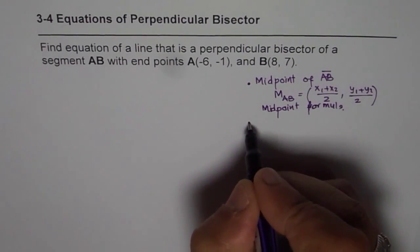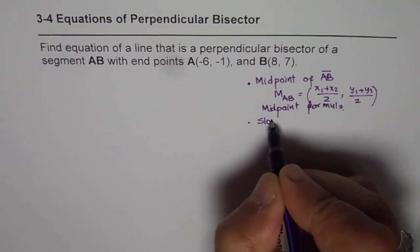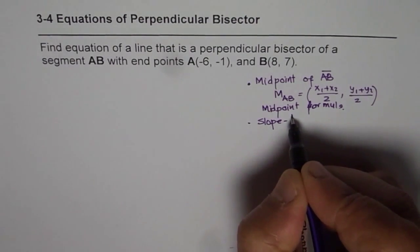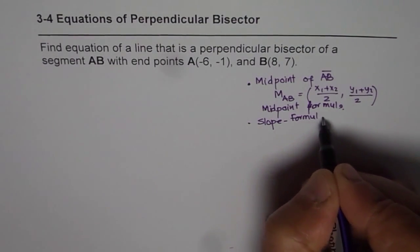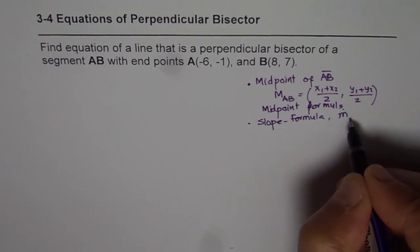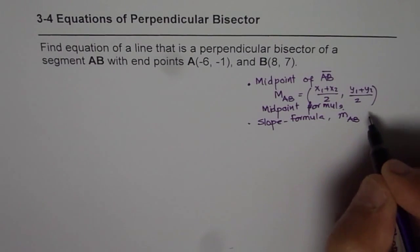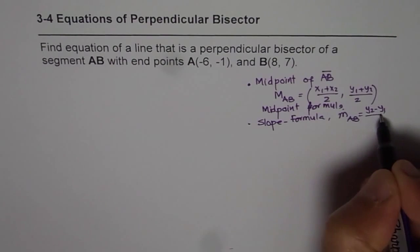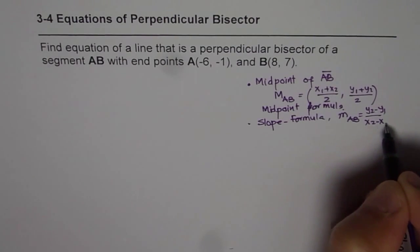The second step is, find slope of, use slope formula to find slope M of AB. And the slope formula is, as you know, (y2 - y1)/(x2 - x1).